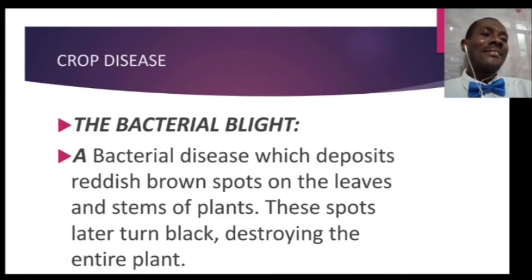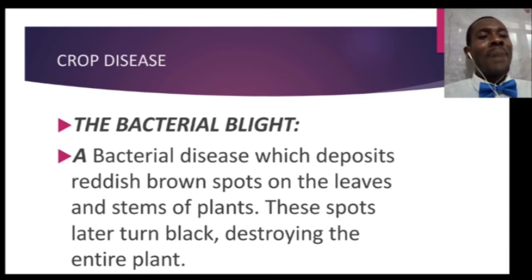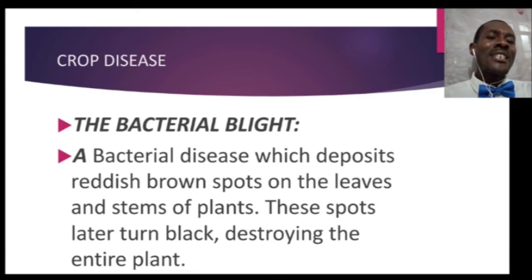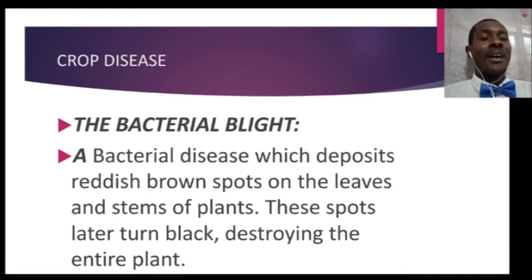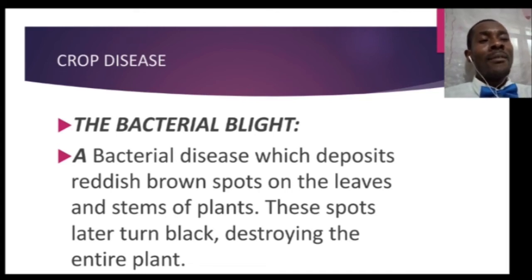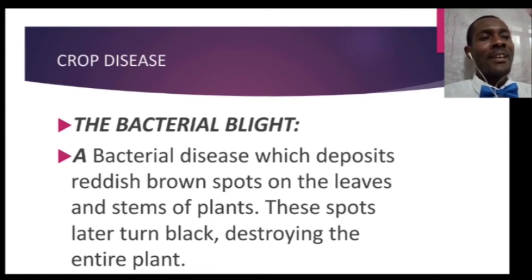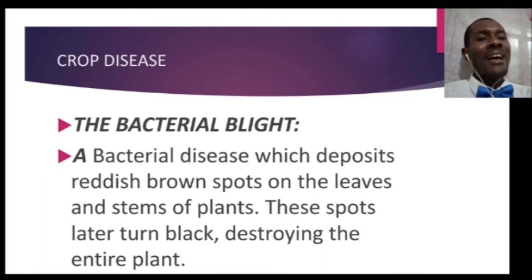The next and last crop disease is bacterial blight. From the name, you can tell it is caused by bacteria. It deposits reddish-brown spots on the leaves and stems of plants, which later turn black, destroying the entire plant. The bacterium affects the entire plant, causing reddish and brown coloration that eventually turns black. It mostly affects plants like cotton, tobacco, and other crops of agricultural importance. I will leave control measures as your assignment.